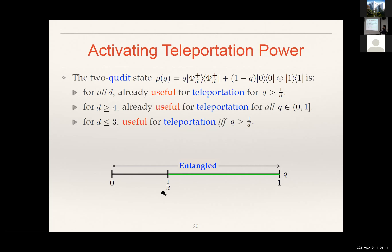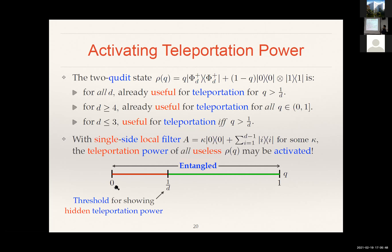The states in the interval below 1/d were initially useless. But if you take a filter — in this case you only need filtering on Alice's side — with some diagonal filter where kappa is a parameter depending on both q and d, then you can activate the teleportation power of all those states. That is for the theoretical aspects. Any questions?